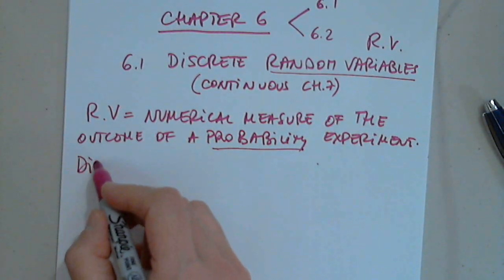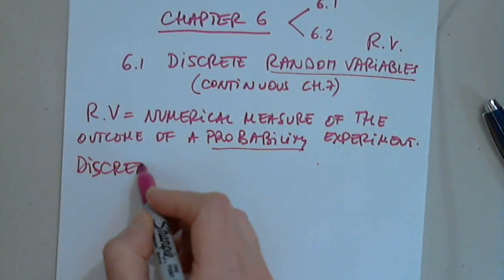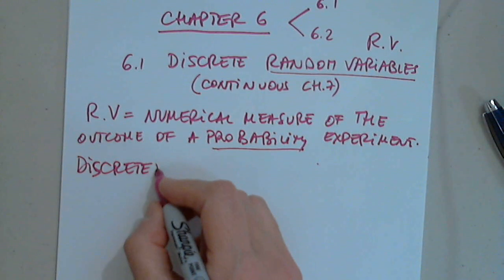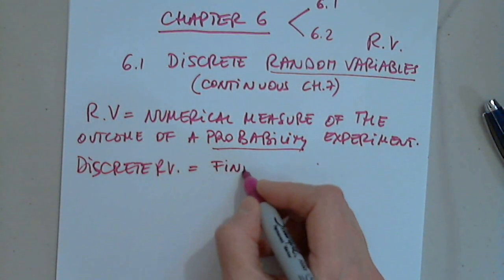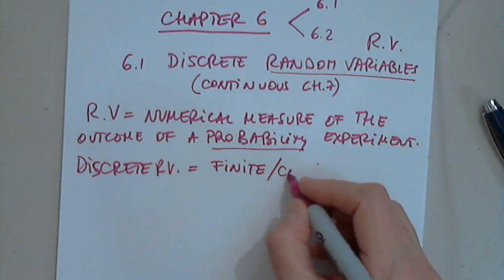What is a discrete? We had this before. Discrete random variable is anything that is finite, right? Or countable.